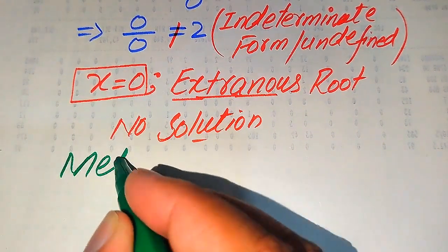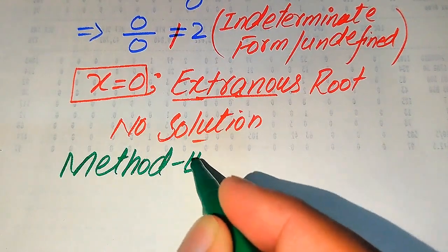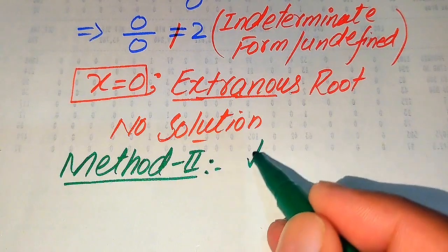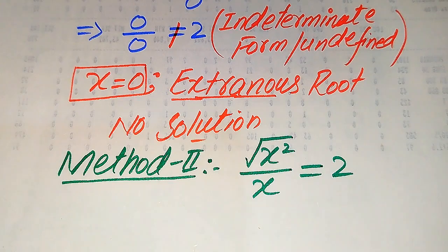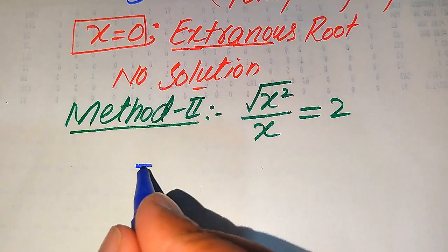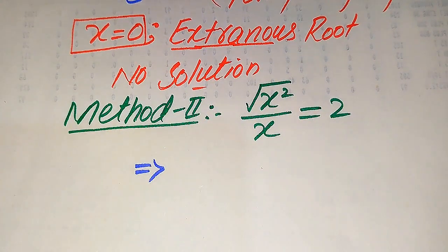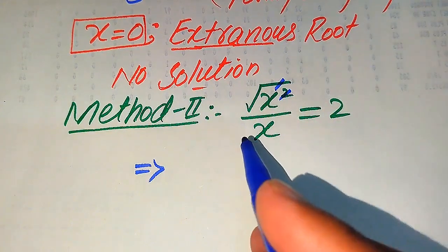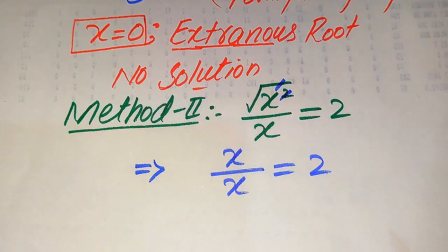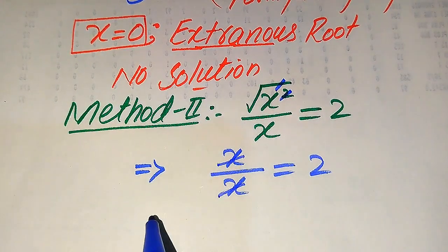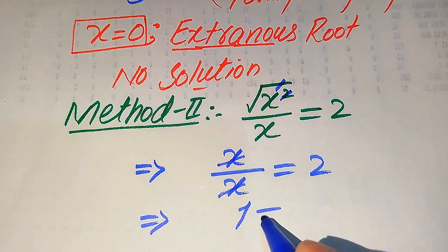Now we move to the second method. We copy down the given equation: the square root of x squared divided by x equals 2. We simplify the left hand side. The square root and the square cancel, and we get x divided by x equals 2. Then x cancels with x, and we get 1 equals 2.